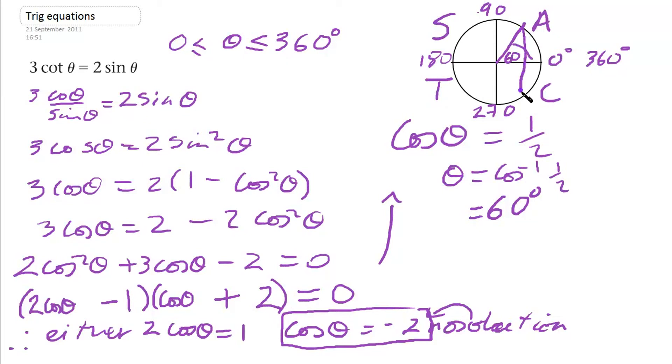So therefore, we just draw a line straight down to the cos quadrant. And we know that's going to be 60 because of our angle rules. We've got the symmetry.